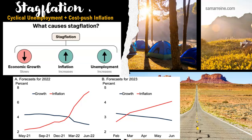It tends to be cost-push inflation coupled with cyclical unemployment — the kind that comes from an economy going through a downturn or recession, coupled with businesses being unable to push down costs enough, so they feel they need to pass at least some of the price increase onto the consumer. Obviously, it depends on the business; some businesses are more aware of their customer base and needs than others.